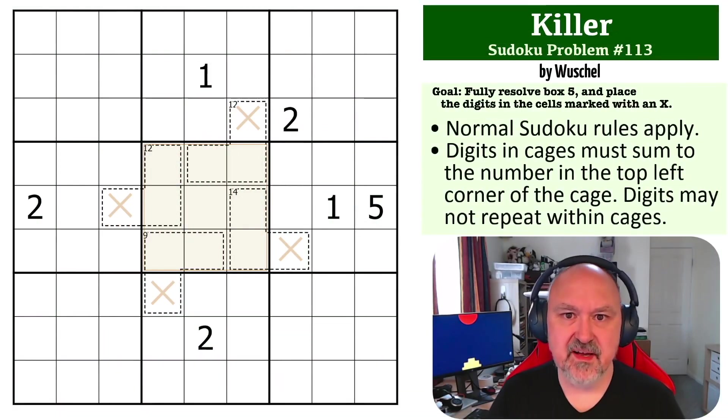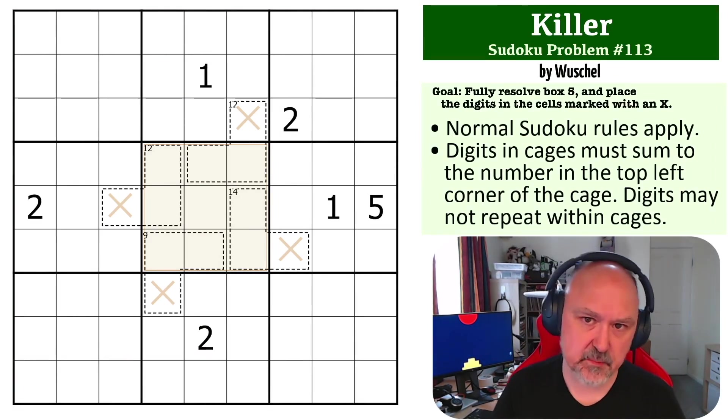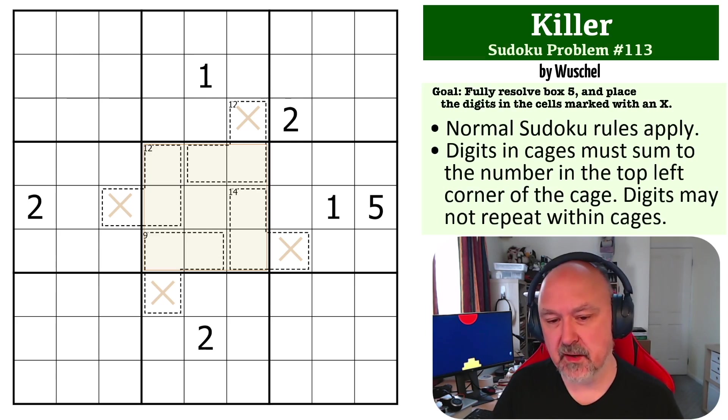Hey everyone, this is Brimster and I'm coming to you today with puzzle number 113 in the Sudoku Problem Series. This is a killer problem submitted by Wushel. This was submitted as medium, maybe hard, but after one of my testers completely failed this puzzle and it took me over 10 minutes, this one I'm rating as very hard. The goal is to fully resolve box five and place the digits into the cells marked with X's.